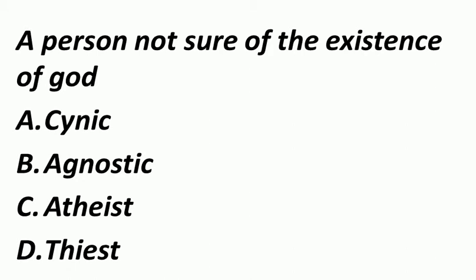A person not sure of the existence of God — मतलब ऐसा व्यक्ति जिसे भगवान के होने पर विश्वास नहीं होता. ऐसे व्यक्ति को हम बोलते हैं Agnostic. Atheist में थोड़ा difference है — Agnostic होता है जो भगवान के होने पर भरोसा नहीं करता, और Atheist होता है जो भगवान पर ही भरोसा नहीं करता, नास्तिक. Theist मतलब जो भगवान पर भरोसा करता है, उसकी पूजा करता है.